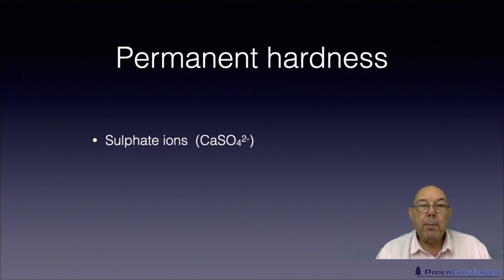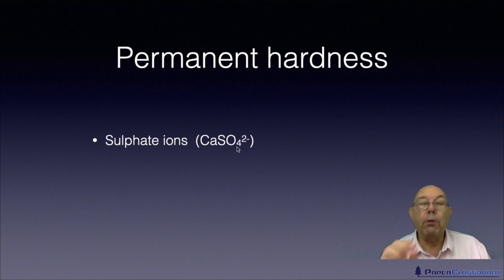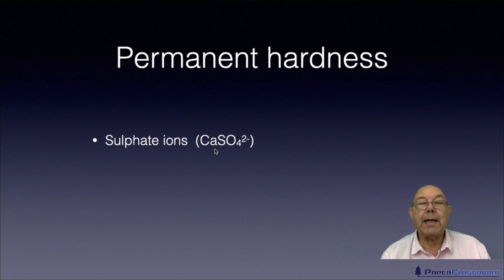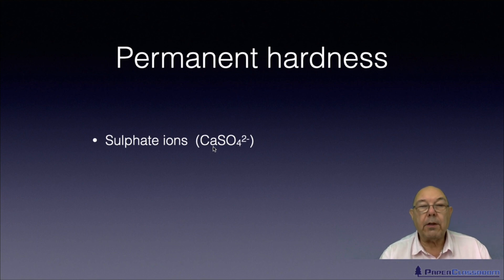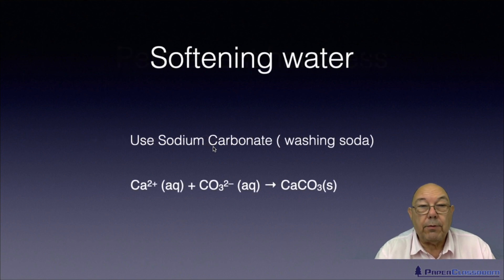Permanent hardness is where you have sulfate ions rather than bicarbonate ions. These sulfate ions are linked to the calcium — it's the calcium again that causes the hardness. You could also have magnesium ions, so magnesium sulfate.